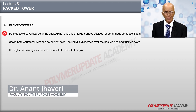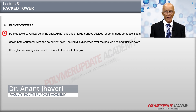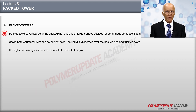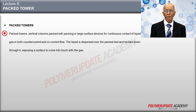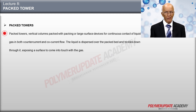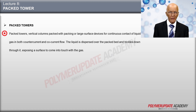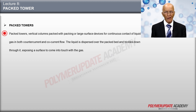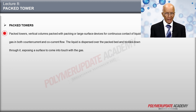Packed towers are usually used for continuous contact of liquid and gas in both countercurrent and co-current flow in vertical columns, which have been filled with packing or devices of large surface area, as shown in the figure. The liquid is distributed over and trickled down through the packed bed, exposing a surface to contact the gas.